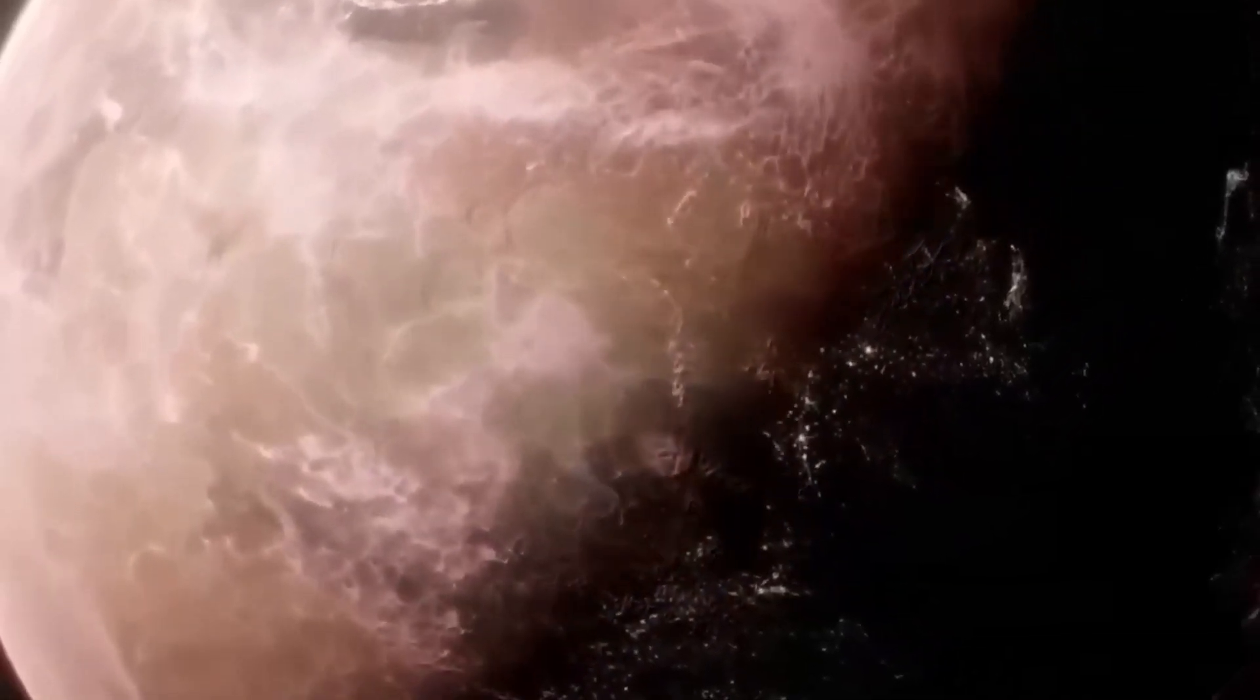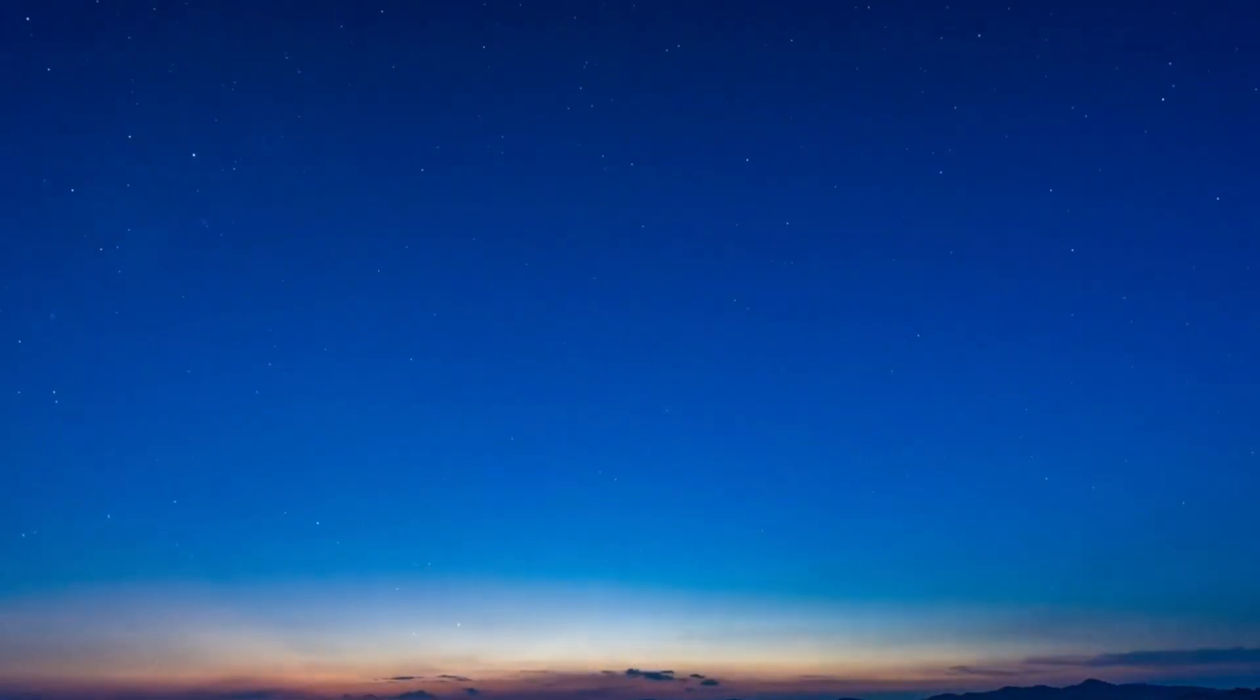Even though Proxima B looks similar to Earth, certain features make it uninhabitable. For one, the planet is too close to its star, and as such, it keeps getting extreme ultraviolet radiation from the star.